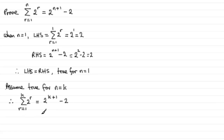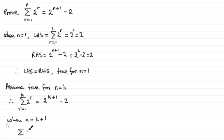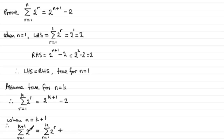On that basis, we now need to prove true for n equals k plus 1. So looking at when n equals k plus 1, we have the sum of 2 to the power r, r going from 1 to k plus 1, which must equal the sum of the first k terms plus the last term in the series — the (k+1)th term — which is 2 to the power k plus 1.